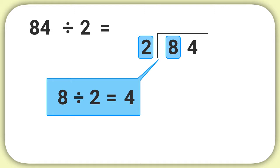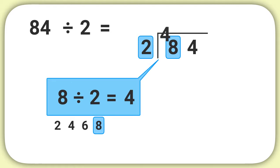If you ever aren't totally sure on a division fact, another strategy is to skip count by 2's: 2, 4, 6, 8. We see 8 is the 4th skip count, so we get an answer of 4. Now write our answer of 4 above the line.